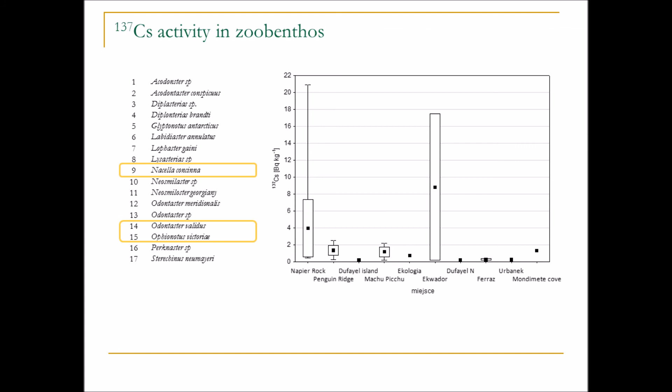Despite the large diversity of species, only three species appeared most often between the stations. Out of 66 samples analyzed at the moment, more than 60% of results were below the detection limit. So the activity in the Antarctic samples is very low and much lower than in the Arctic zoobenthos.